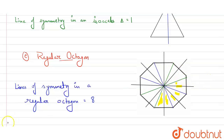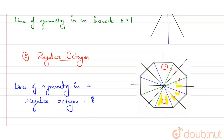Let's count the lines of symmetry in the octagon: one, two, three, four, five, six, seven, and eight. There are eight lines of symmetry in a regular octagon. We have now completed all parts of the question.